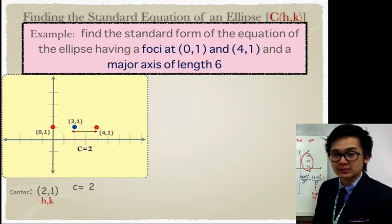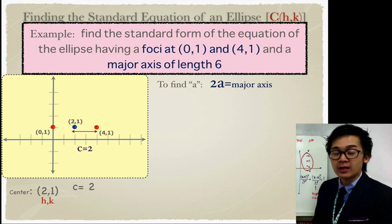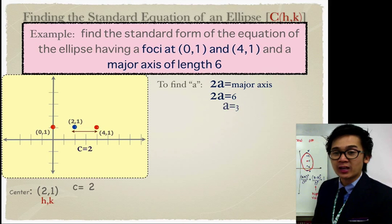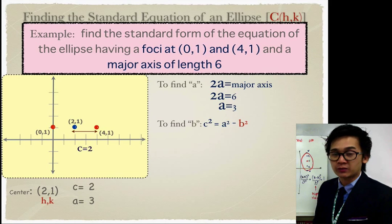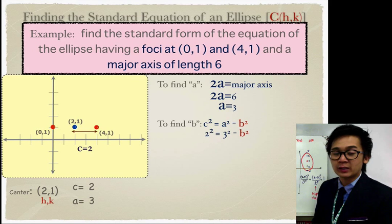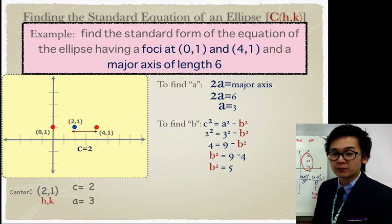To find a, we use the major axis. The major axis has length 6, and in an ellipse the major axis equals twice a. So 2a equals 6, which gives a equal to 3. With c equal to 2 and a equal to 3, we use the formula c squared equals a squared minus b squared. Substituting, 2 squared equals 3 squared minus b squared, therefore b squared equals 5.